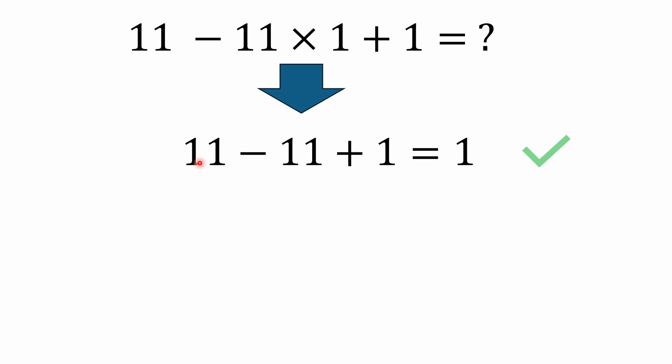So this could have been written as 11 minus 11 plus 1. Of course, 11 minus 11 is 0, and 0 plus 1 equals 1.